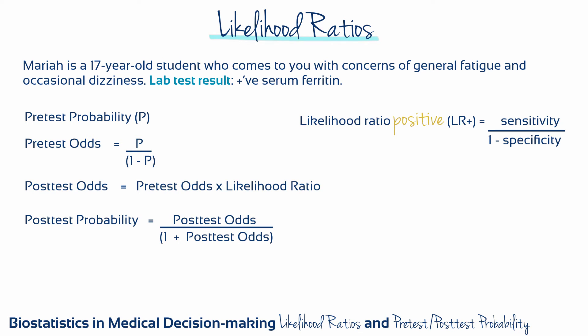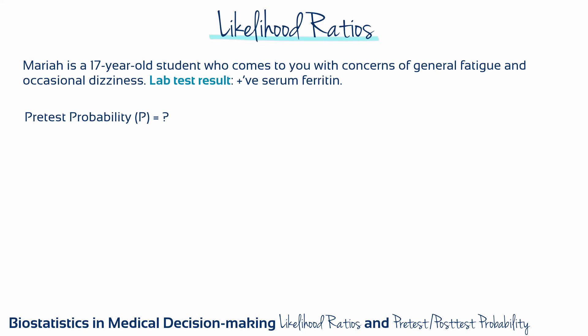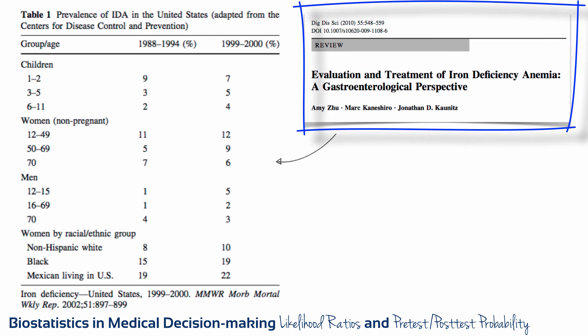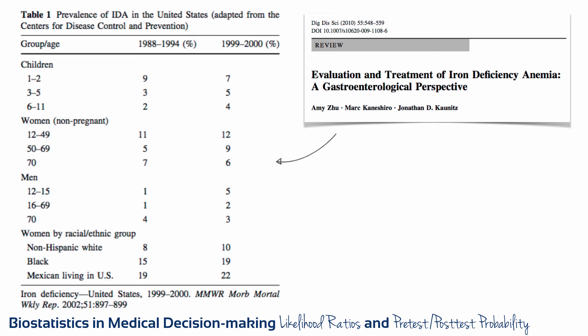Here are the things we have to calculate or quantify. First up is the pretest probability — we need to quantify our prior belief, i.e. our clinical suspicion, that Mariah has iron deficiency anemia. We want to be as objective as we can by looking for a pretest probability based on solid published data. This paper has prevalence data from the CDC for iron deficiency anemia. The prevalence for iron deficiency anemia for women in Mariah's age range is 12%, based on the 1999–2000 numbers. This means that 12% of women aged 12–49 had iron deficiency anemia, so any female patient in Mariah's age group would have had a 12% pretest probability.